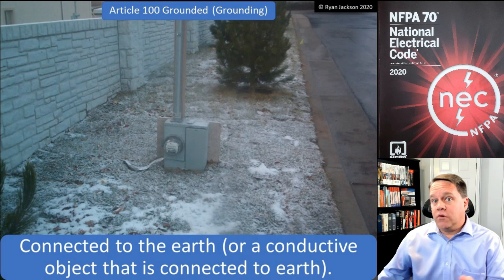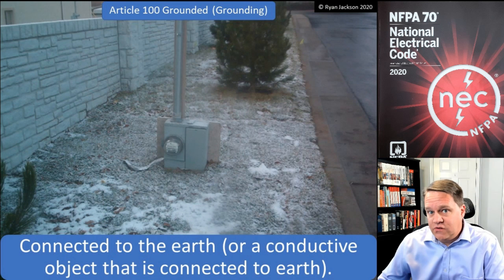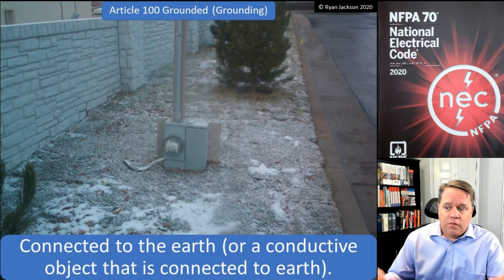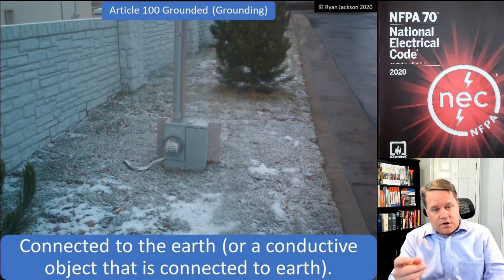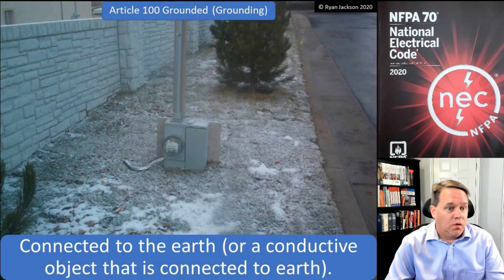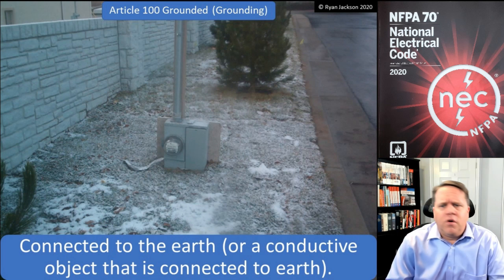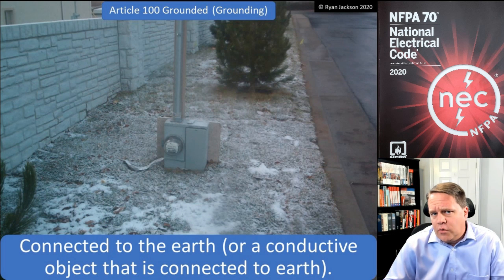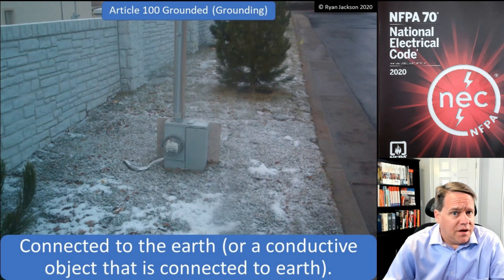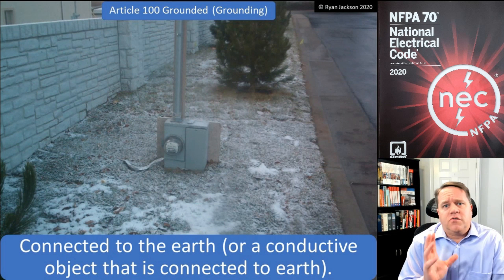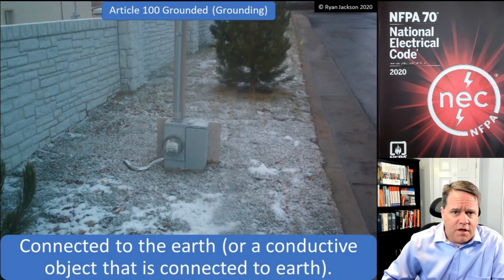So in the 2008 code, we stopped saying 'this shall be grounded' and instead started saying it shall be connected to an equipment grounding conductor, or connected to a grounding electrode conductor, or it shall be bonded. We started using more correct terminology. Because look — this is grounded. If you're told you have to ground your switches, as 404.9(B) used to say, does that mean you drive a ground rod at each switch, or put the switch in the dirt? Obviously they meant connect it to an equipment grounding conductor.